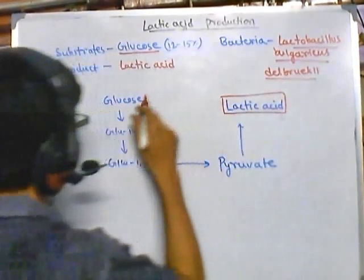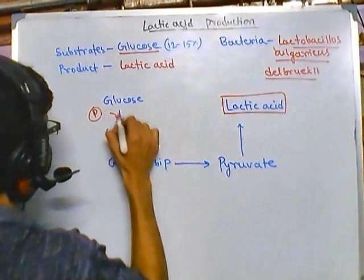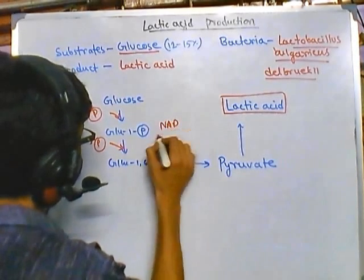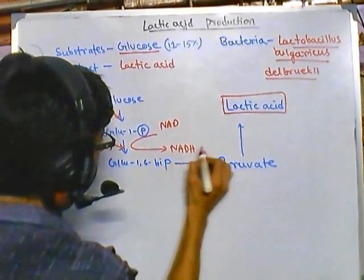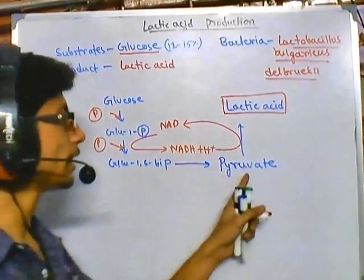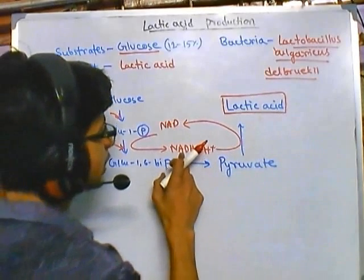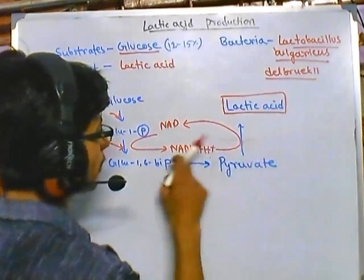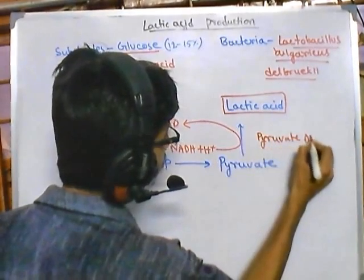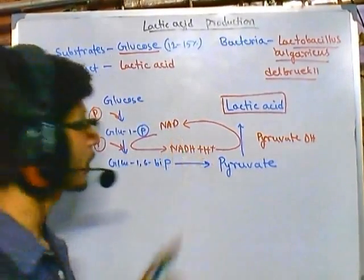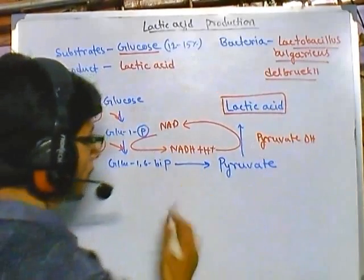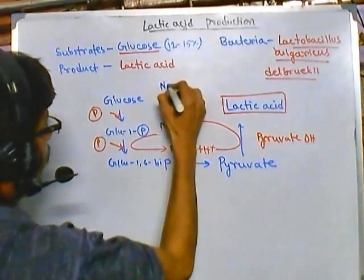For the first stage, from glucose to glucose-1-phosphate a phosphate is added, then another phosphate is added for glucose-1,6-bisphosphate. At this stage NAD is required and is converted into NADH + H⁺. When pyruvate is converted into lactic acid via the lactic acid fermentation pathway, this NADH is required by the pyruvate dehydrogenase complex, which converts it back into NAD. So it's a cyclic process and lactic acid is generated via this pathway — with no oxygen present at any point.